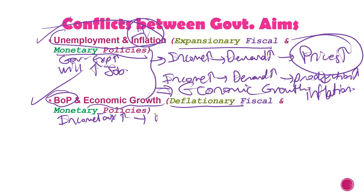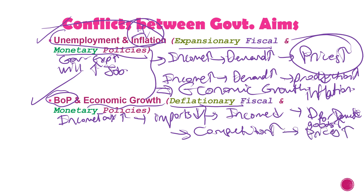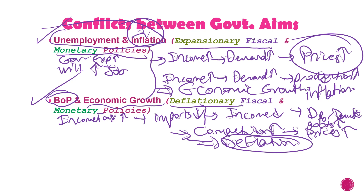With a contractionary policy: income decreases, demand for domestic goods decreases, production decreases, and we have less economic growth. So when the government achieves the balance of payments objective, it leads to negative economic growth. This illustrates the conflict between macroeconomic objectives.